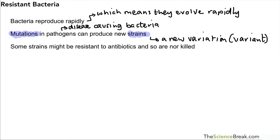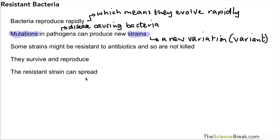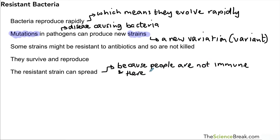Then we have the idea that some strains might be resistant to antibiotics, so they are not killed. They are resistant because the DNA has mutated to allow that to happen. They survive and reproduce because they are no longer affected by the antibiotic, and that means the resistant strain can now spread. The reason it can spread is because we have people who are not immune to this disease, and also there is no effective treatment.